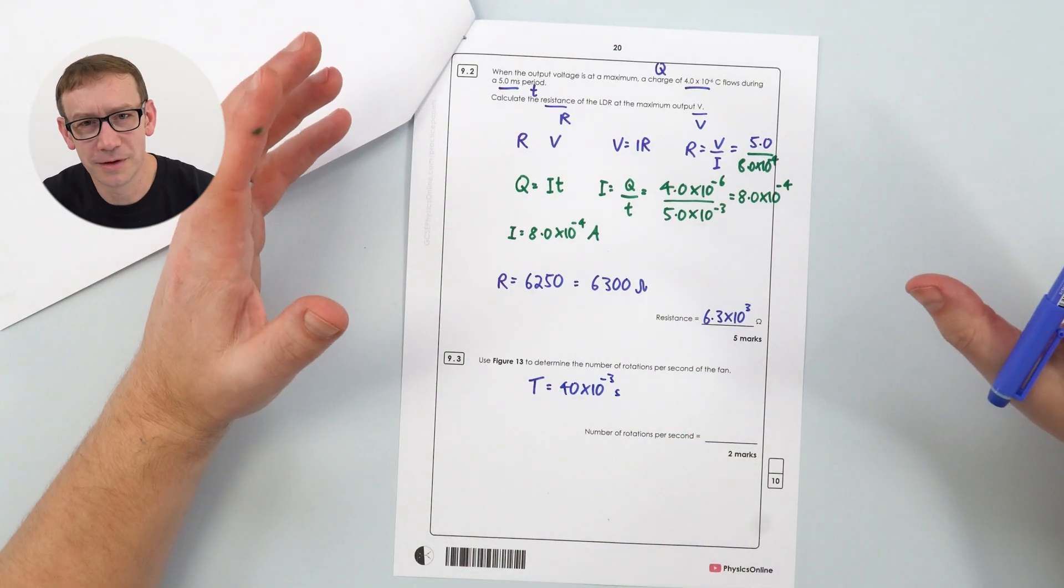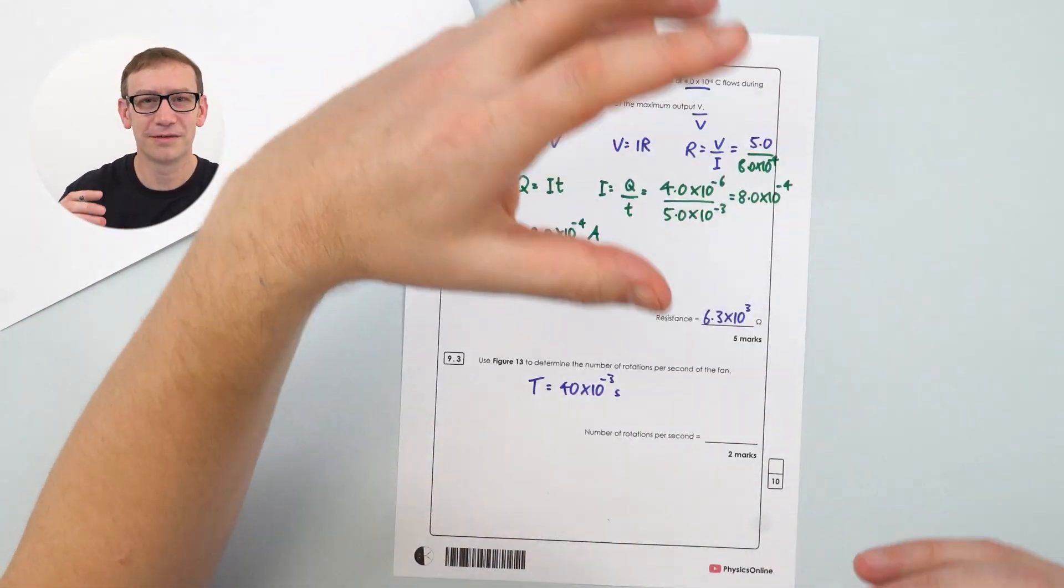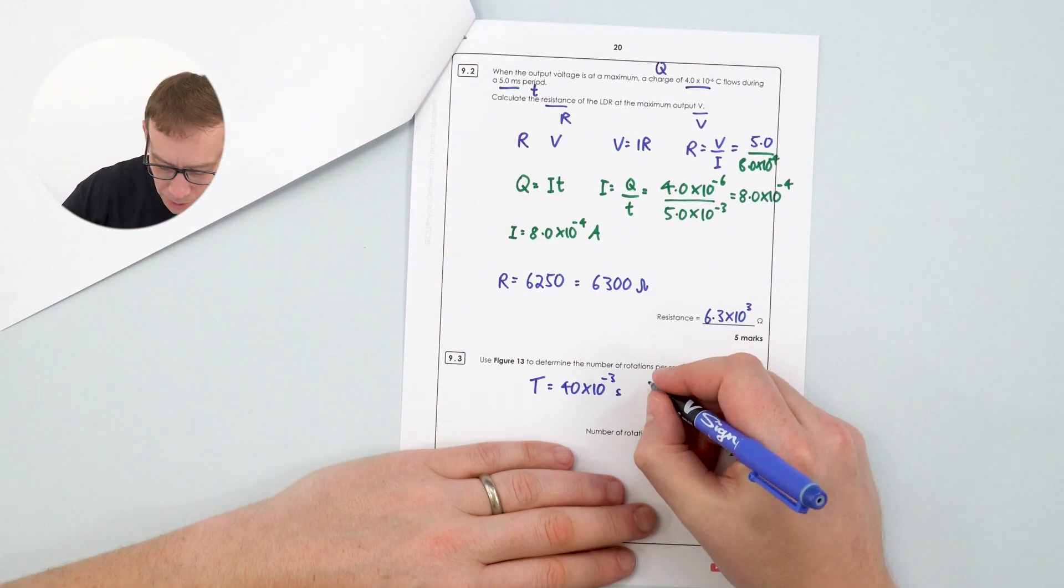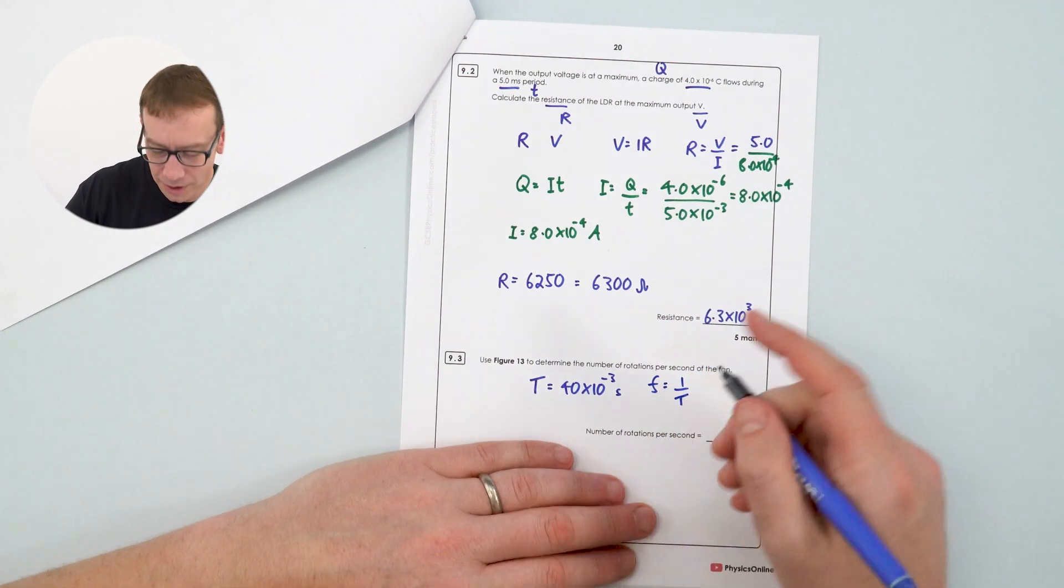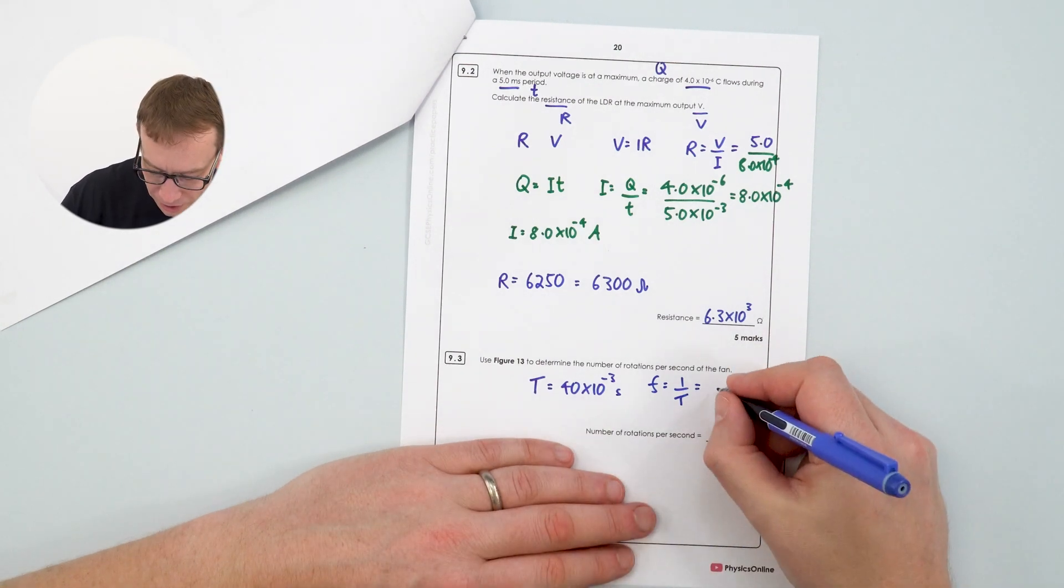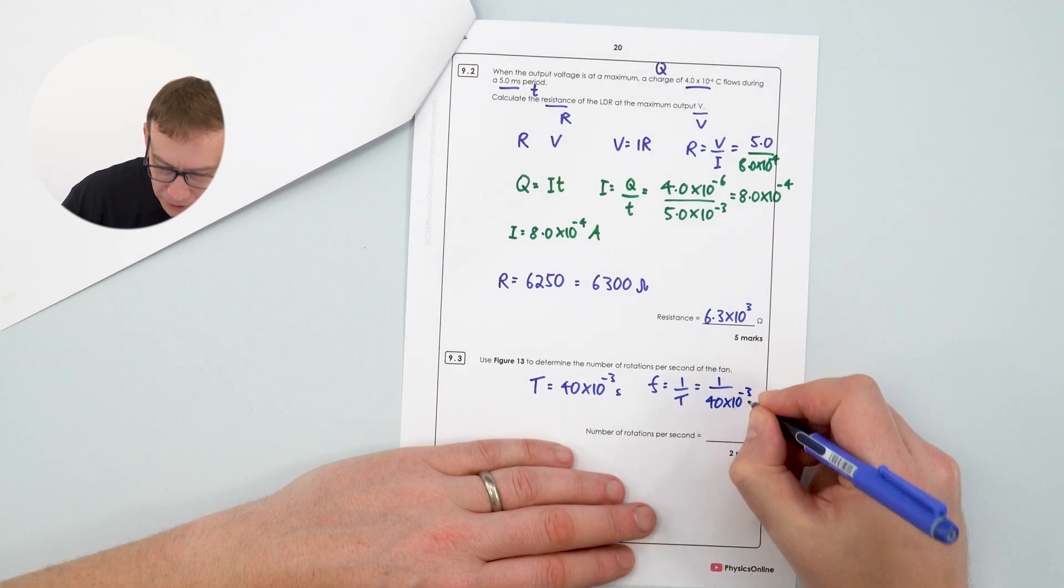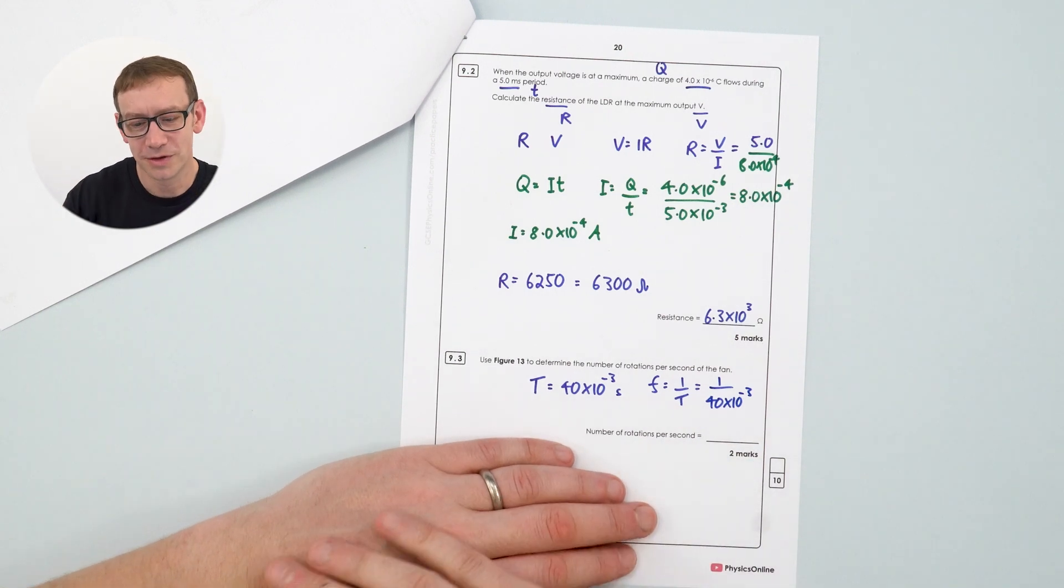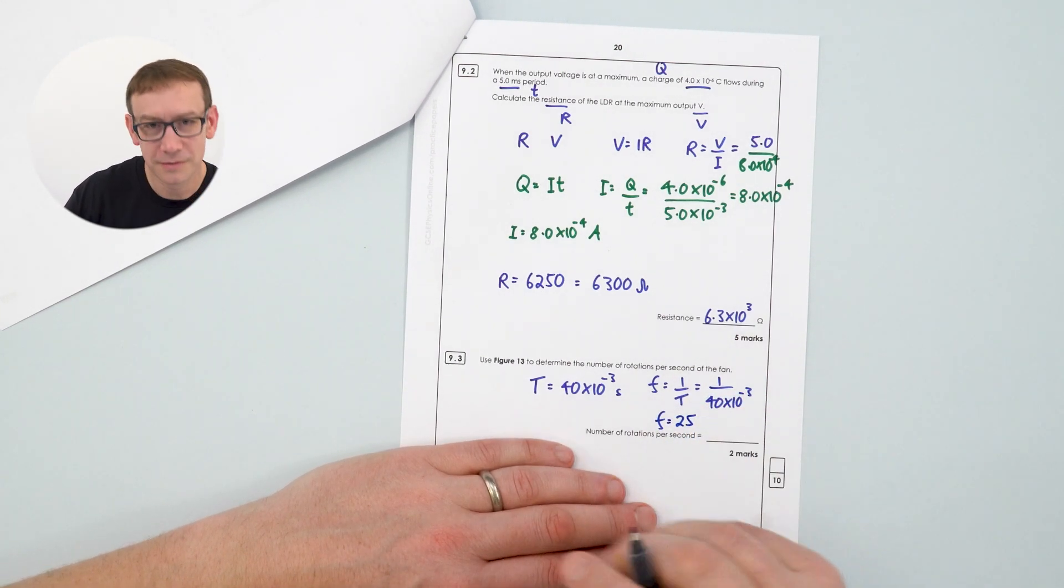So how many times does that rotate per second? Well this is then this kind of synoptic question, it kind of links to the work you might have done in waves, where we can say that frequency is equal to one over the time period. So the frequency, the number of times something happens per second, is equal to one over 40 times 10 to the minus three. And again, when you put this into your calculator, this gives an answer equal to 25 hertz.